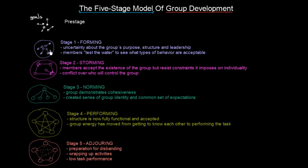Now stage one is called forming. As you can see, around our group of individuals a small circle has been created, representing a group. There is uncertainty about the group's purpose, structure, and leadership — people who joined the group are uncertain about what they are doing, what the structure will be, and who will be the leader. Members test the water to see what types of behavior are acceptable.